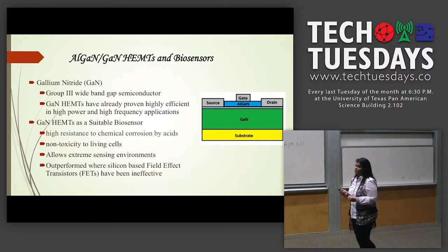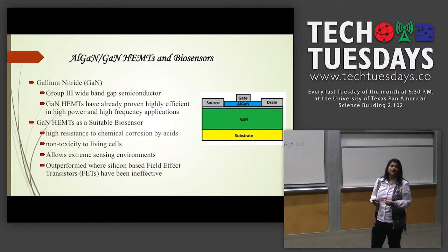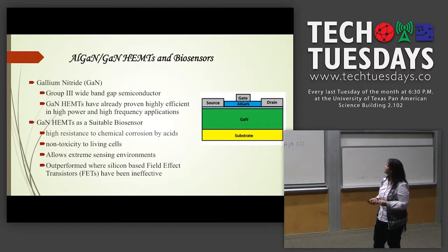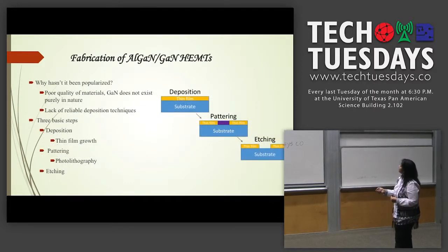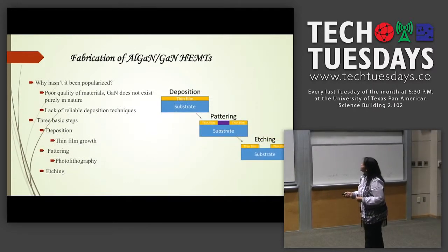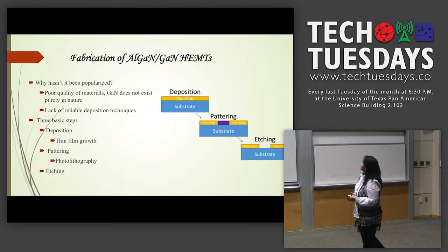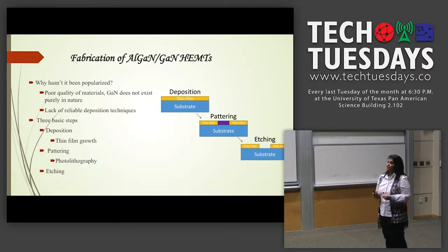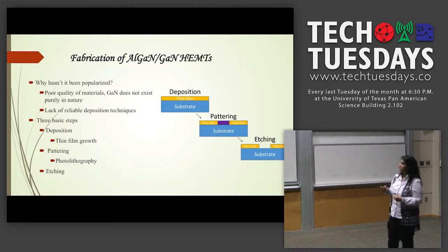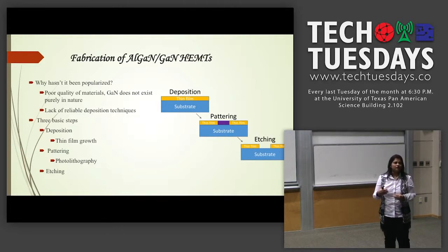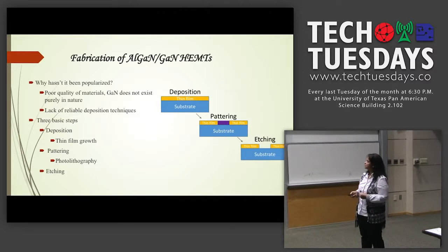The device we are trying to build is similar to existing designs but will be at nanoscale — all thickness dimensions are nanoscale. There are a few fabrication steps: the first is deposition, the next is patterning where we make gate, drain, and source, and the last part is etching. These are simplified presentations of the fabrication steps.